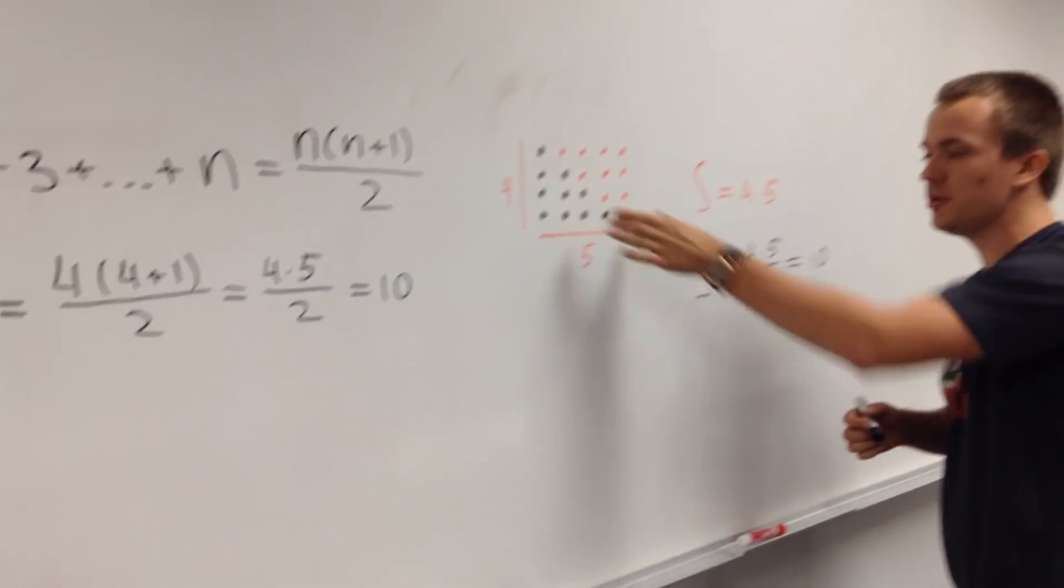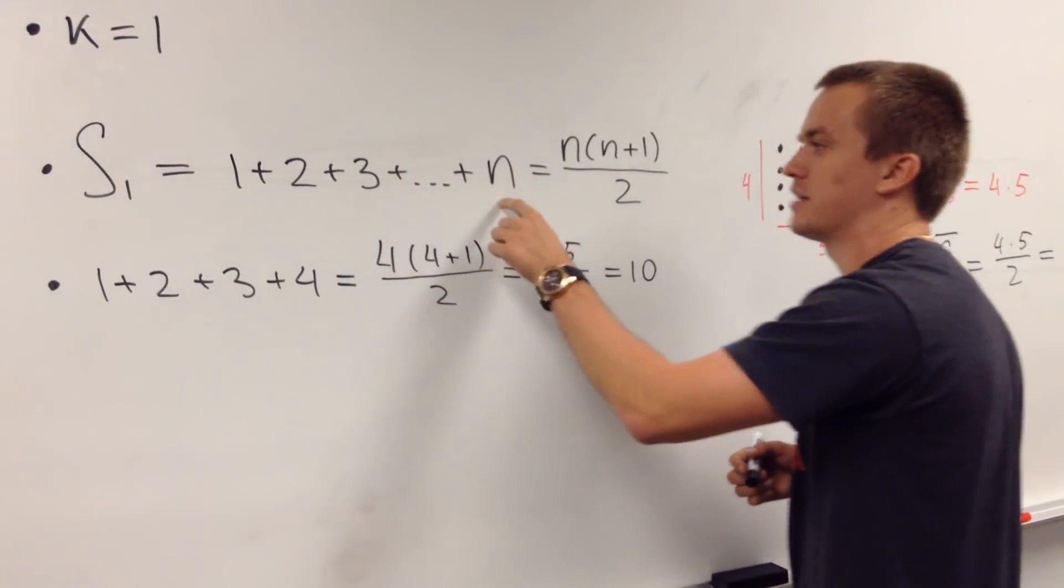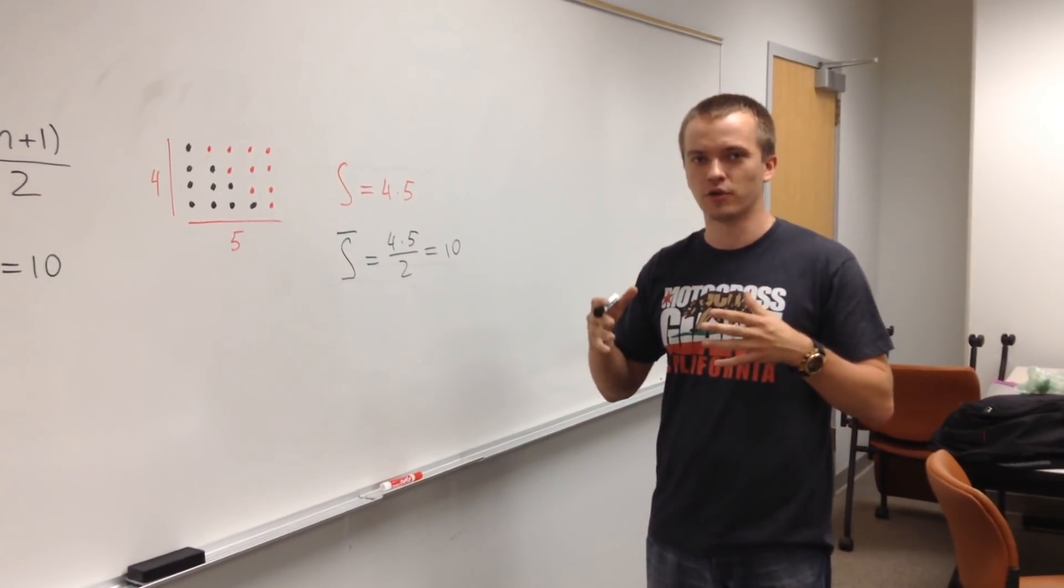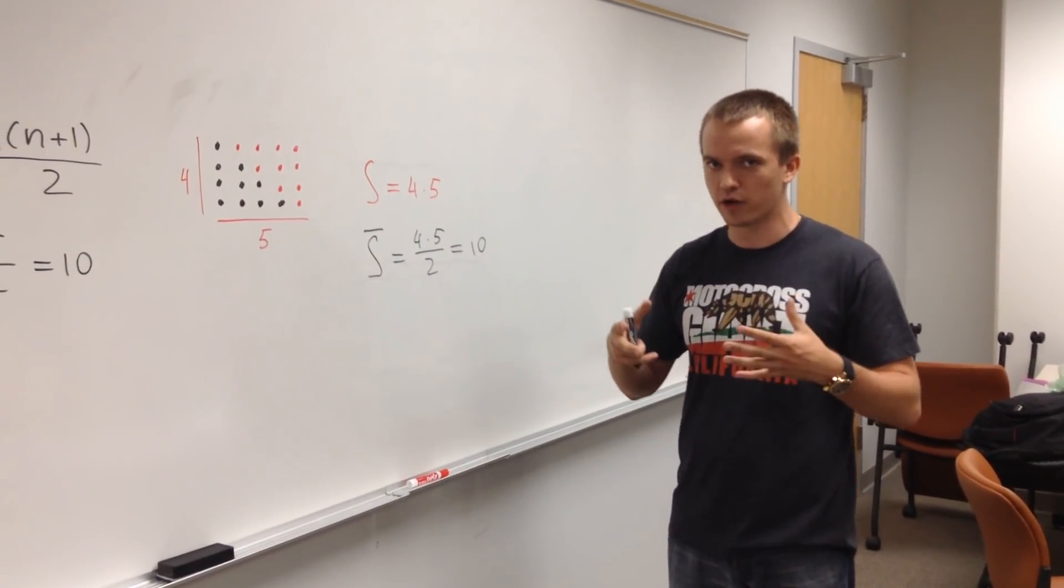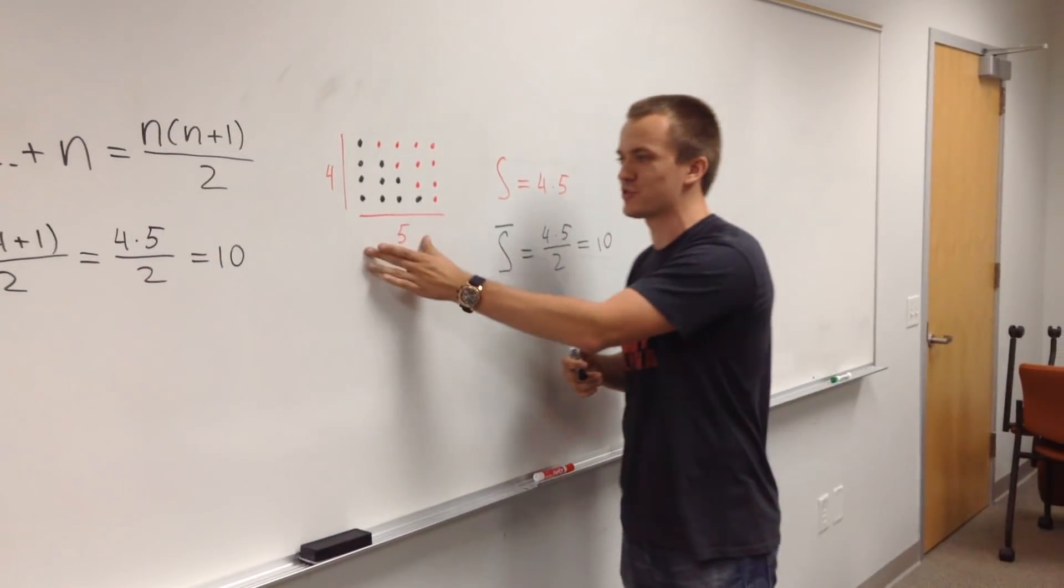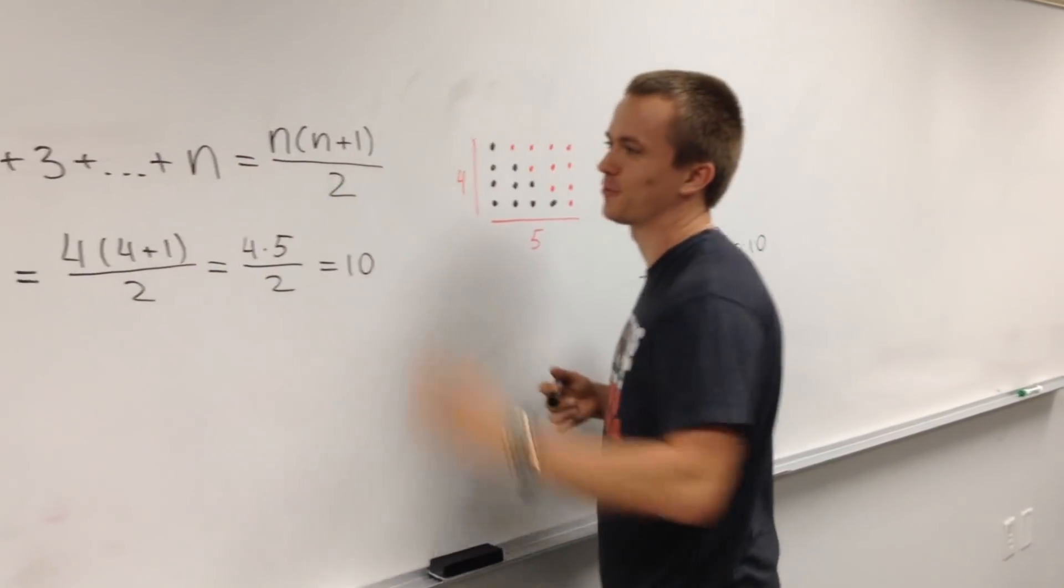And the same argument you can use in the case when you have 1 plus 2 plus 3 plus n. So there's two ways how you can prove some math formulas. There's a really technical algebraic way when you're just using some algebra, and there's like geometry, really beautiful and nice way when you can see the picture that stands behind this beautiful formula.